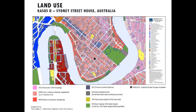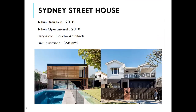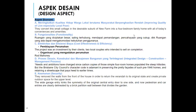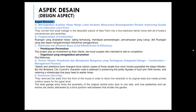Ini adalah gambar untuk penggunaan lahan yang digunakan di Sydney Street House. Kasusnya adalah Sydney Street House yang diberikan pada tahun 2018 dan tahun operasionalnya tahun 2015. Selanjutnya saya akan membahas mengenai aspek ekonomi. Aspek ekonomi terdapat poin-poin seperti meningkatkan kualitas hidup warga lokal, fungsionalitas, efektivitas dan efisiensi biaya, proses desain, konstruksi dan manajemen bangunan yang terintegrasi, dan keamanan.